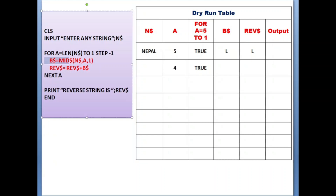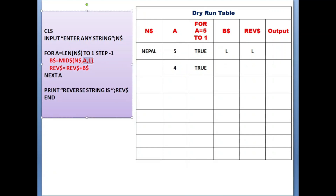When the condition is true, it goes inside the loop again to repeatedly execute the same statements. B$ equals MID$(N$, A, 1). This time value of A is 4, so from the fourth position only one character. Let me check: one, two, three, four - that is the fourth position, one character - that means A. So we store A in B$. Next, REV$ equals REV$ plus B$. In REV$ we have L already, plus B$ which is A - that means 'LA'. In strings the plus symbol means concatenation, so we get 'LA'.